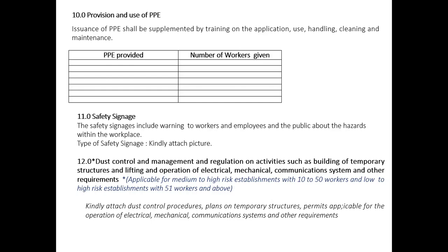On provision and use of PPE: we issue PPE — list the type and number of workers given PPE. Safety sign aids are important — print and post these to warn workers, employees, and the public about hazards within the workplace. Place them at the entrance and dedicate visible areas. It is better to laminate them so they last, not just flimsy paper signs. Attach photos once safety sign aids are posted at the front door and in affected areas and include them in our report.